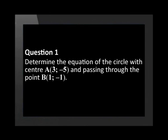Determine the equation of the circle with center A(3, -5) and passing through the point B(1, -1).